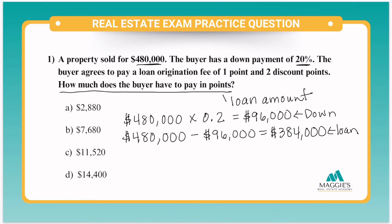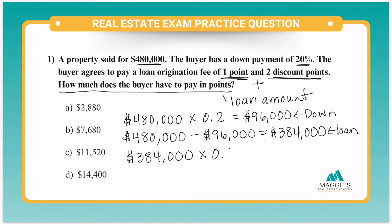Now that we have the loan amount, we can apply the points. We have one point for loan origination and two for discount points. So if we add those together, we get a total of three points. So I'm going to take the loan amount of $384,000 and multiply it by 0.03, which is 3% in decimal. That's going to equal $11,520 that they have to pay in points. So the answer here is C.